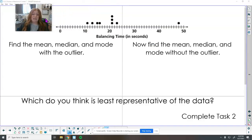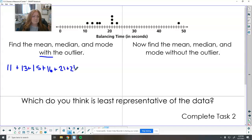Now we want to find the mean, median, and mode with the outlier. We've got - I'm already off to a bad start here - 11, 13, 15, 16. And then we've got 21 three times. So one, two, three, we've got a 23 and a 48.